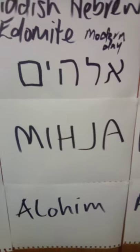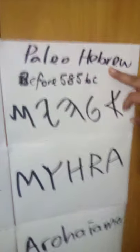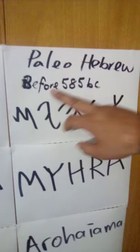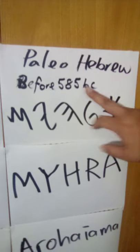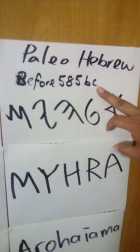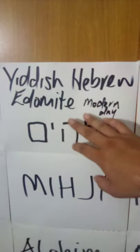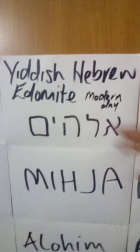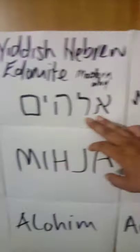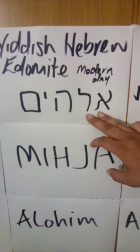I want to take you to Paleo Hebrew. Paleo Hebrew is before 585 BC — it's way older than this Edomite Hebrew language, and it's the same concept as this language here.